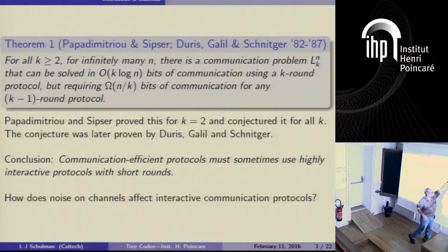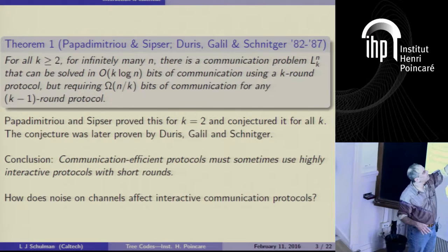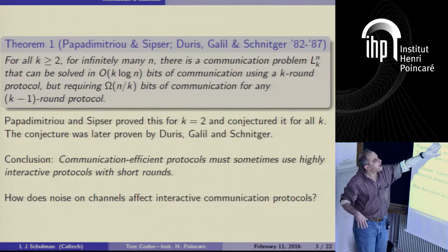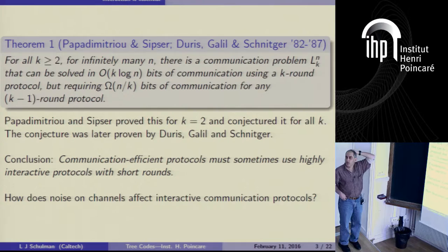This two-party communication problem L_N_K can be solved efficiently with just k log n bits if you're given k rounds. But if you're forced to use even one less round — k minus 1 rounds — then it requires exponentially more communication. This is a foundational result in communication complexity.